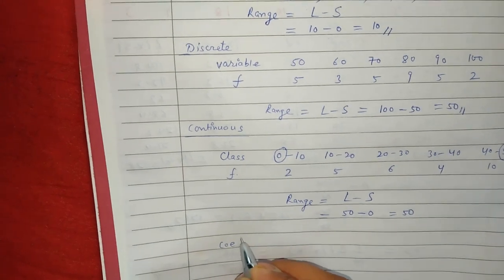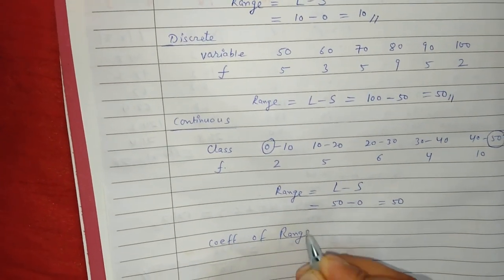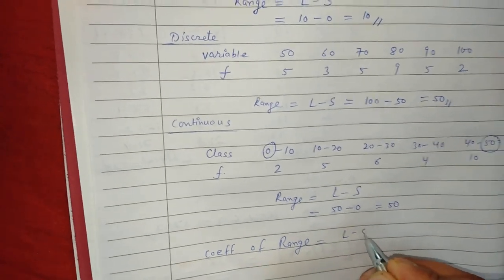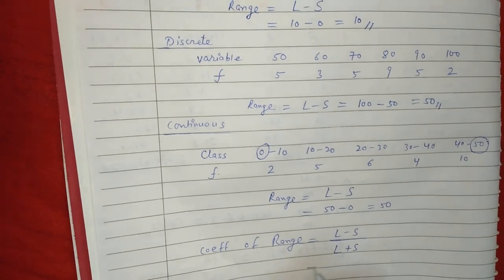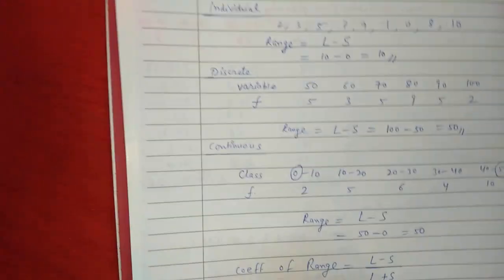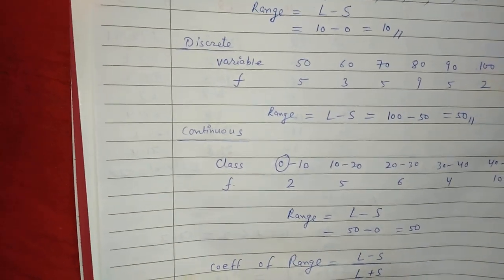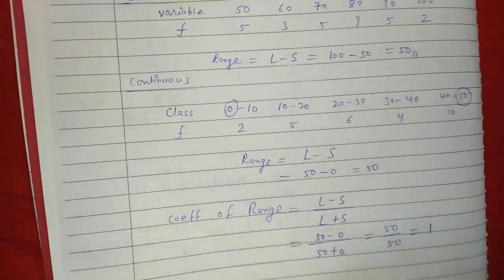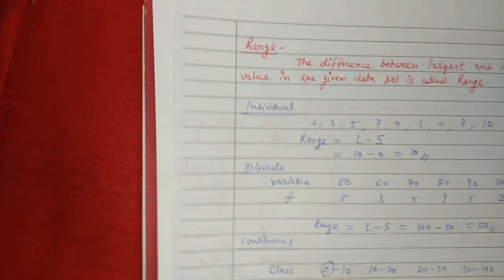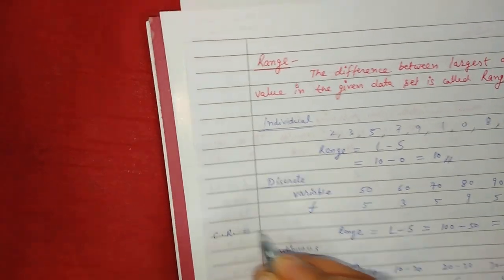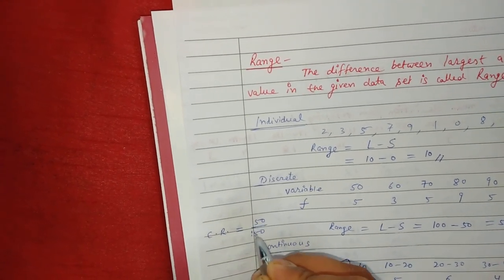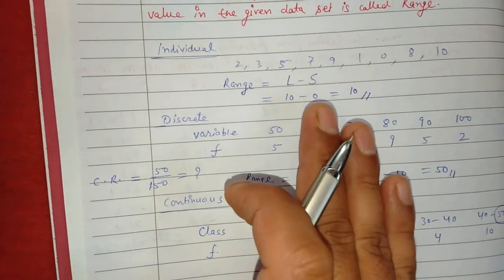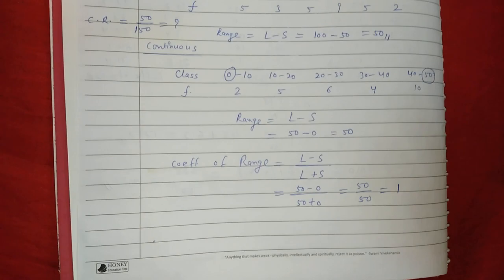Now we have a question: what is the coefficient of range? For individual, discrete, and continuous data, we have a single formula for the coefficient of range: it is L minus S divided by L plus S. In the case of this continuous series data, that is 50 minus 0 divided by 50 plus 0, which equals 50 divided by 50, so the coefficient of range is 1.